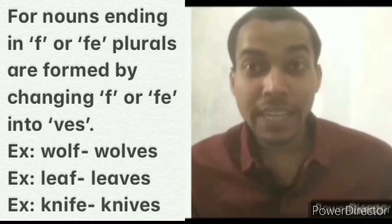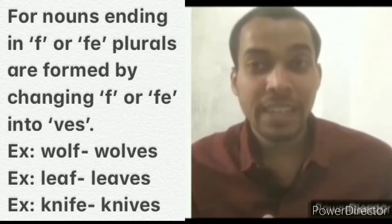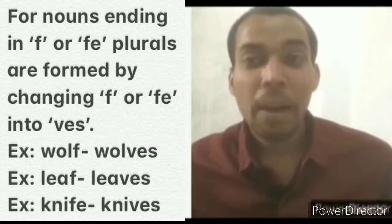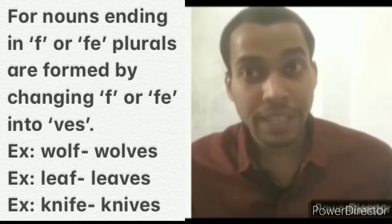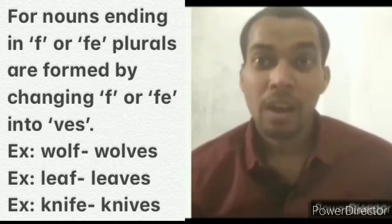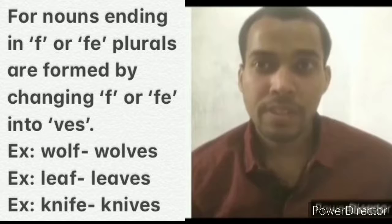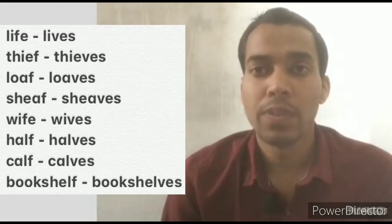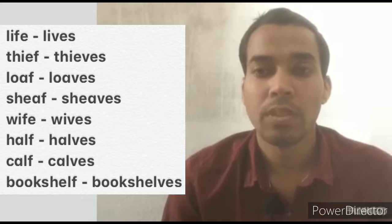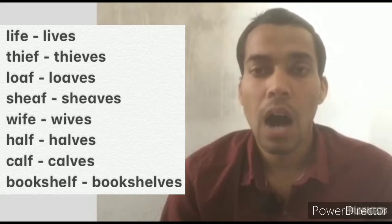For nouns ending in F or FE, plurals are formed by changing F or FE into VES. For example, wolf - wolves, leaf - leaves, knife - knives, life - lives, thief - thieves, loaf - loaves, wife - wives, half - halves, calf - calves.